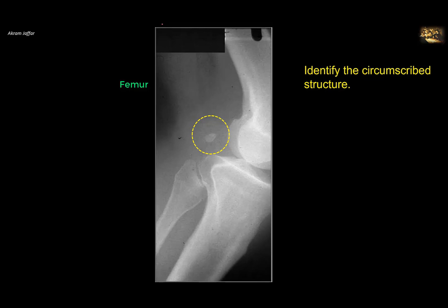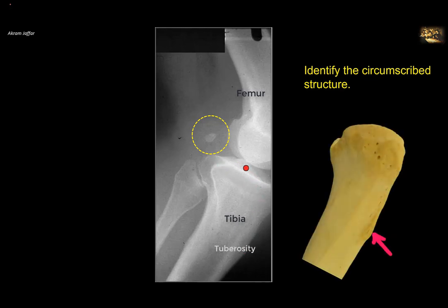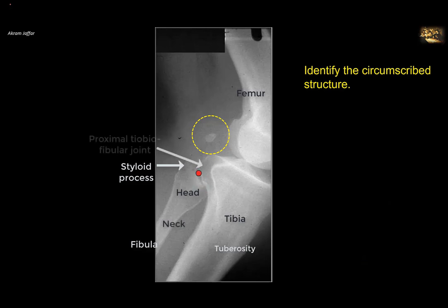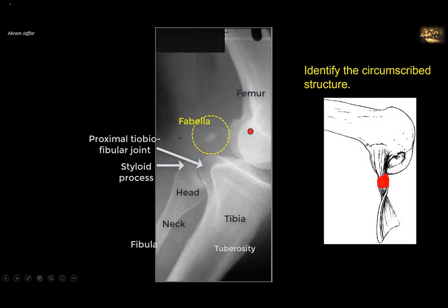Identify the circumscribed structure. In this X-ray, you can see the femoral condyles, the tibia with its tibial tuberosity, tibial plateaus, intercondylar eminence, the head of the fibula with its styloid process and neck, and the superior tibiofibular joint. This bone is located posteriorly — it is not the patella but a sesamoid bone, much smaller than the patella and not always present. It is located within the tendon of the lateral head of gastrocnemius, close to the lateral condyle of the femur, and is present in fewer than 40% of people. It is a variant bone called the fabella.